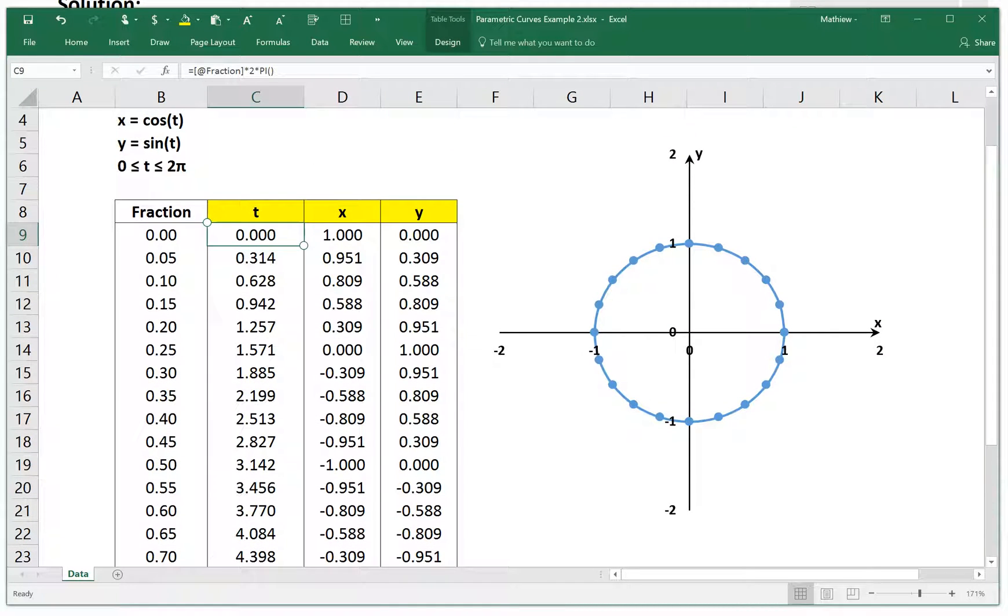That's from 0 all the way to 1, incrementing by 0.05. And then what I did was this t variable, I made this as the fraction multiplied by 2 pi, so that we go from 0 value, then all the way to 2 pi when you reach 1.